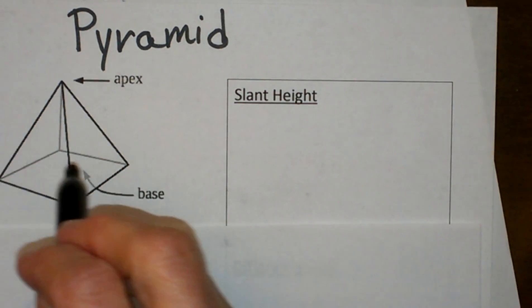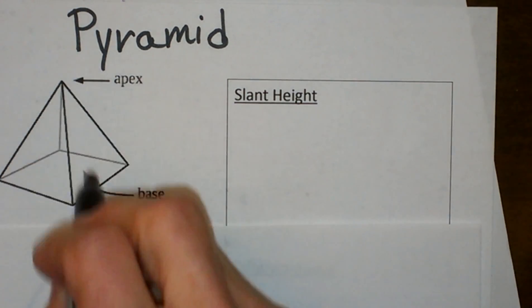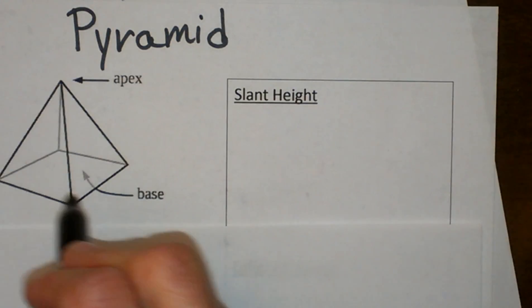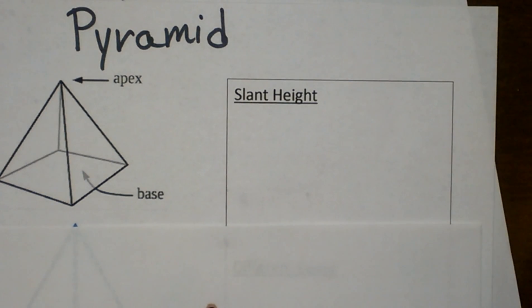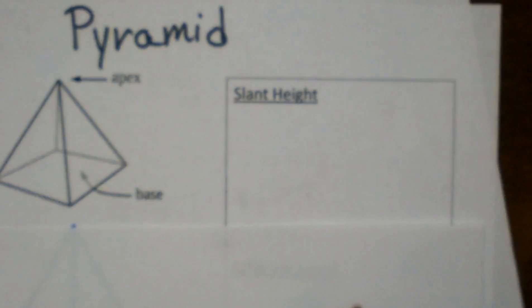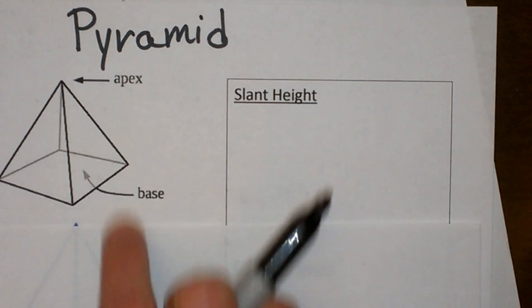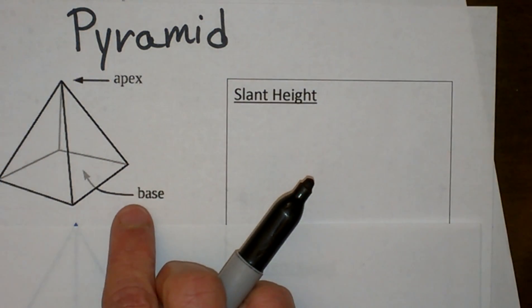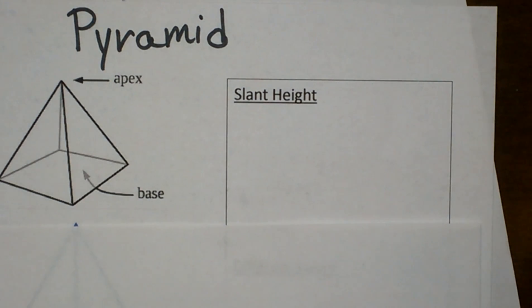It has four lateral sides that are all triangles, see the four, and then we have a square base. So that makes a pyramid because it has a point. The point is called an apex, and we have a base that sits on the ground,